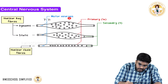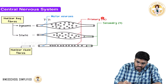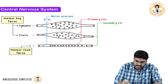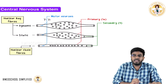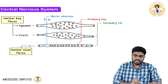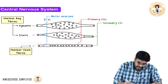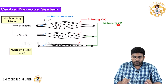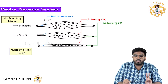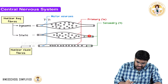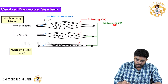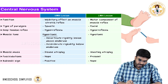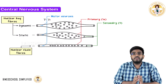From the muscle spindle receptor, the first-order sensory neurons going to the central nervous system are called 1A fibers and secondary fibers. The 1A fibers take sensory innervation from dynamic nuclear bag fibers, static nuclear bag fibers, and nuclear chain fibers — essentially from everything. The secondary (group 2) fibers, however, take input only from static nuclear bag fibers and nuclear chain fibers. So these are the sensory as well as motor innervation to the muscle spindles.